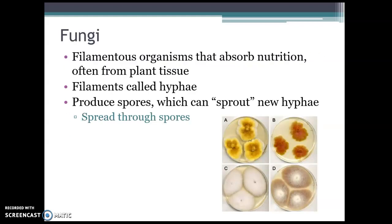A fungus is a filamentous organism, meaning it has little filaments called hyphae and that's how it grows. For the fungus, those hyphae absorb nutrition — they spread out and absorb food from the environment. Sometimes in the forest, if you're looking at mushrooms, a type of fungus, the hyphae can absorb their nutrition through decaying plant material.